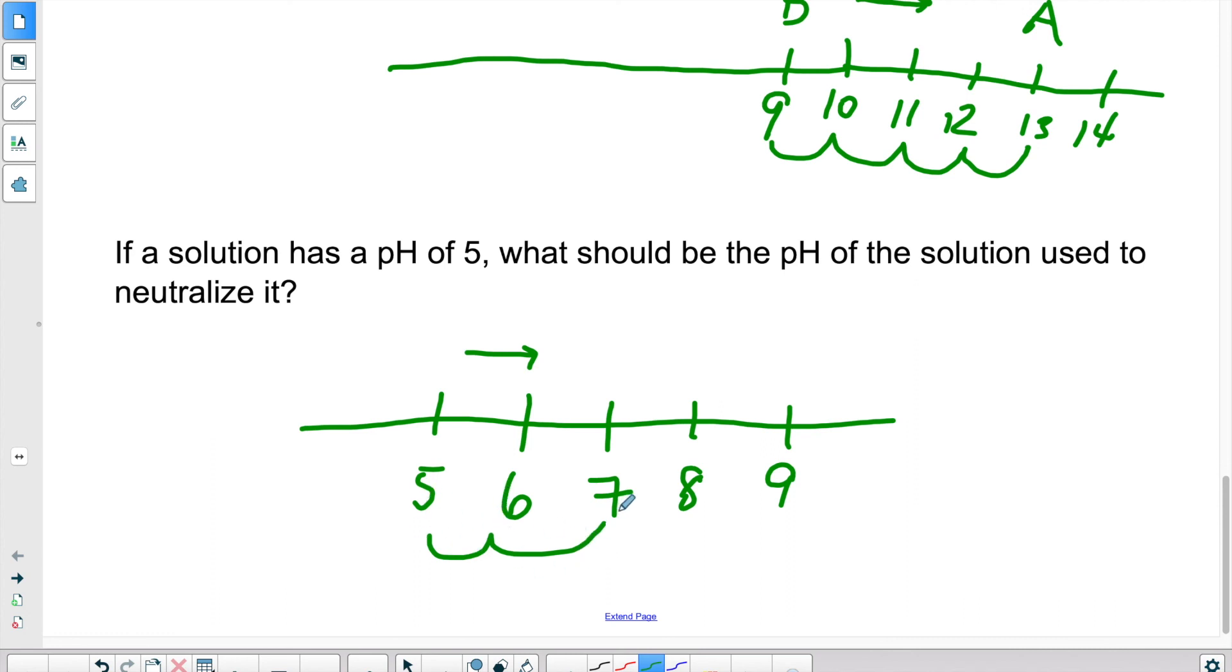If I have something that is 100 times more acidic than the neutral value, then I need something that's 100 times more basic or alkaline in order to cancel its effect. So I would need a pH of 9 in order to neutralize a solution of pH 5.